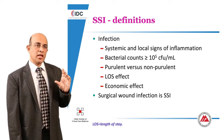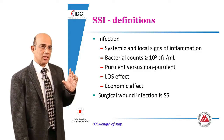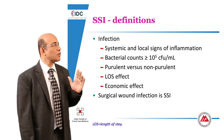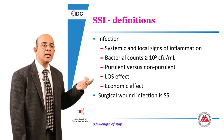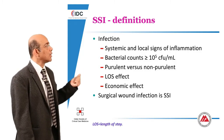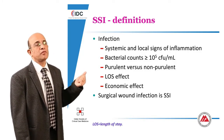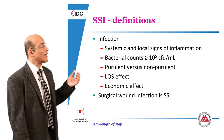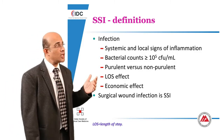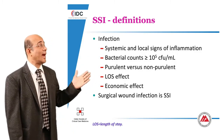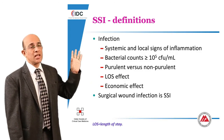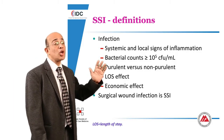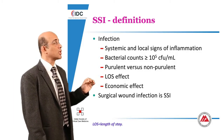We need to define surgical site infections. An infection is associated with signs of inflammation: redness, swelling, pain, and warmth. Usual colony counts of bacteria are more than 10^5. This can be purulent or non-purulent and generally leads to an increased length of hospital stay and has an economic effect for the patient. A surgical wound is a surgical site infection, but sometimes surgical site infections may not be obvious as wounds on the exterior.